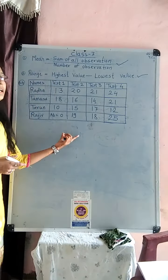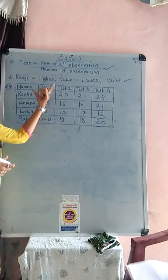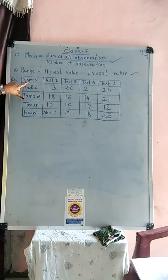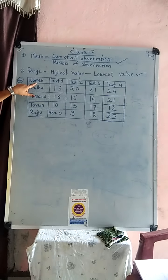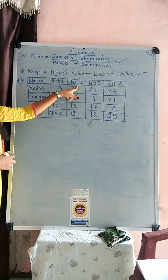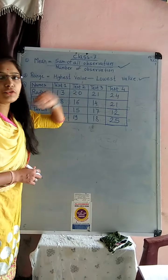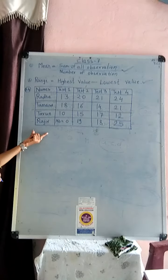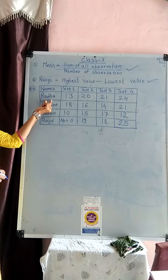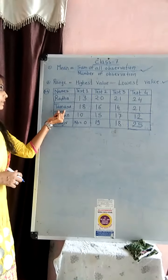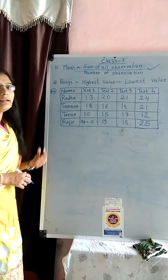Now look at here. Here I draw one table. In that table, first block is for names. Then test 1, test 2, test 3 and test 4. And in name block, look at here, first name is Radha, then Tamaana, Karun and Raju.